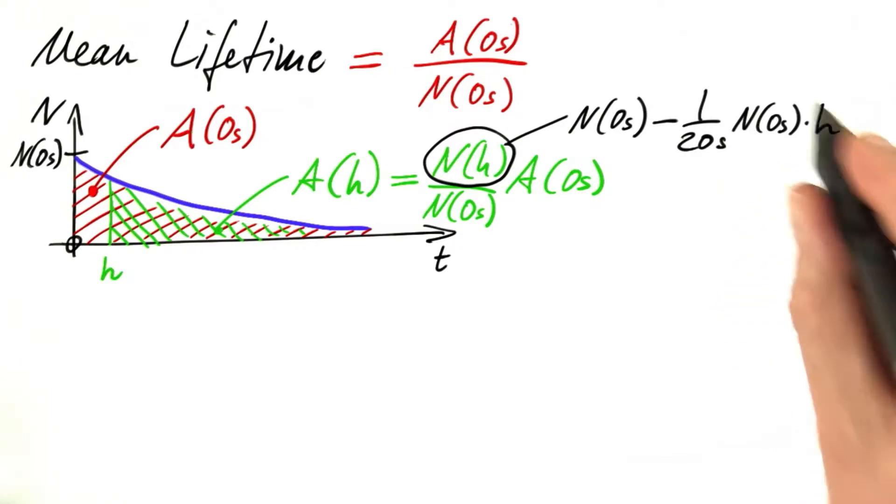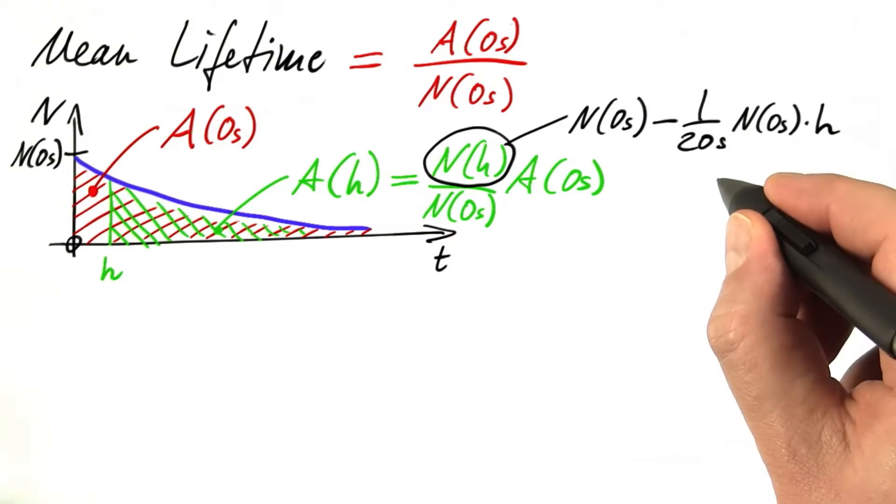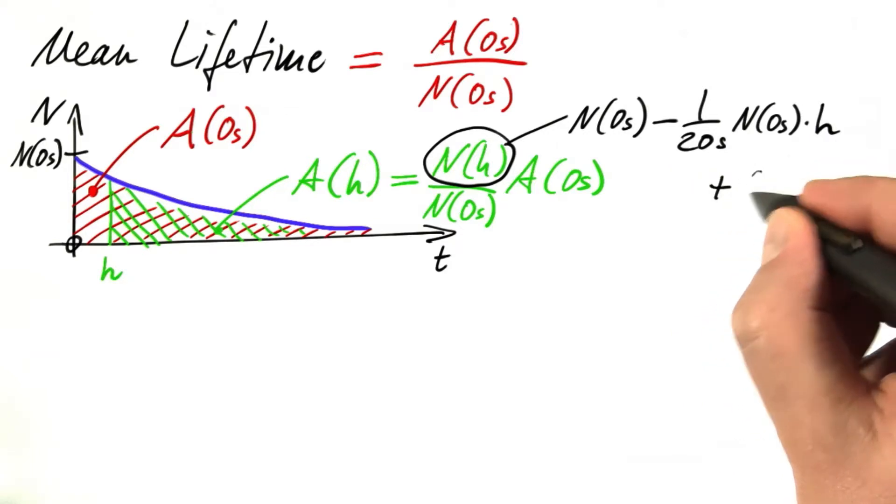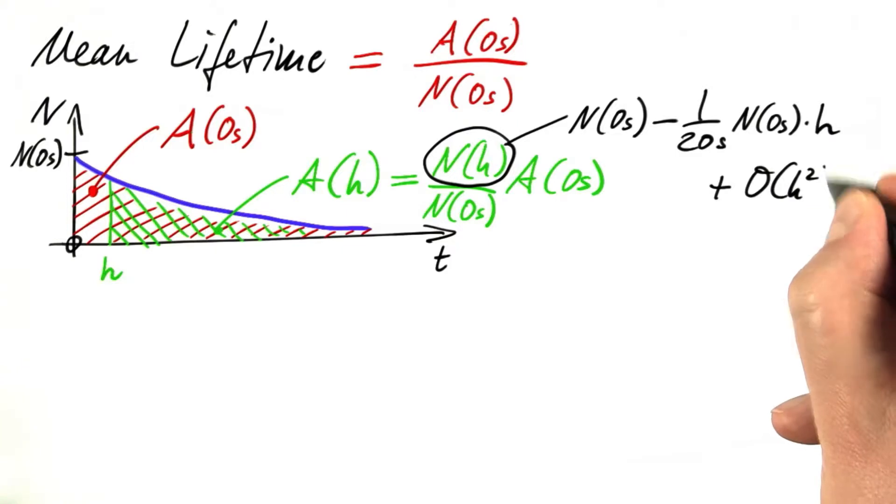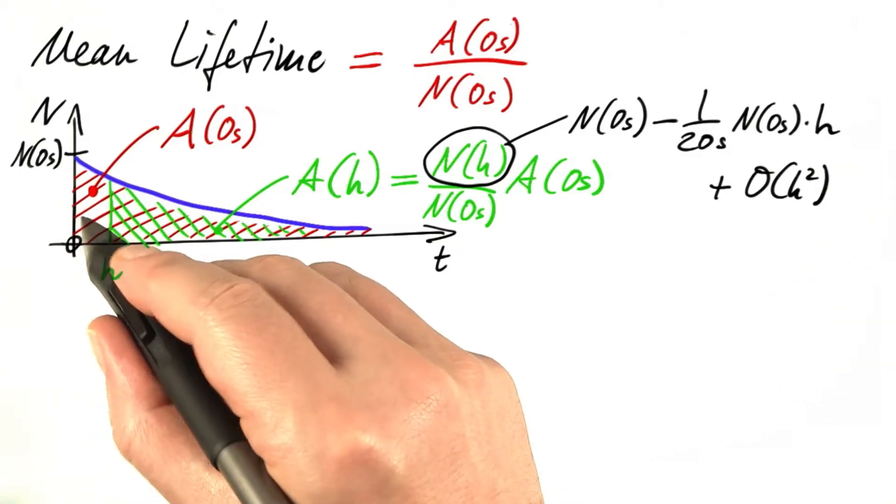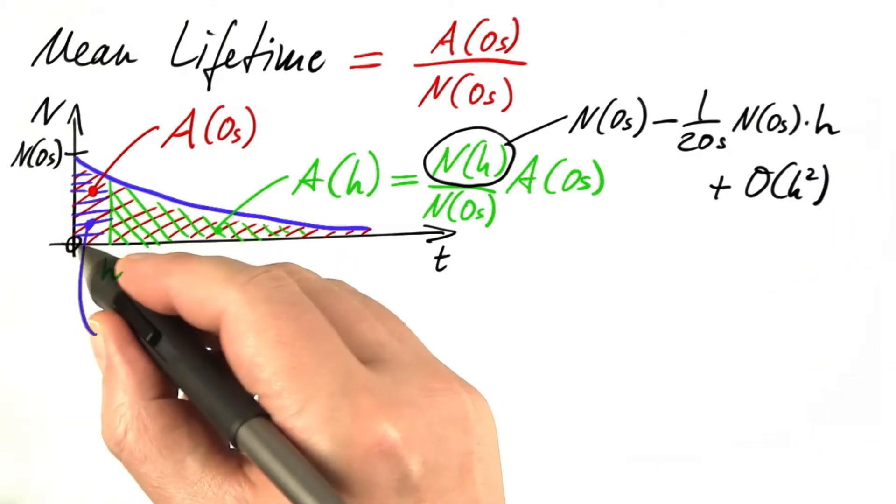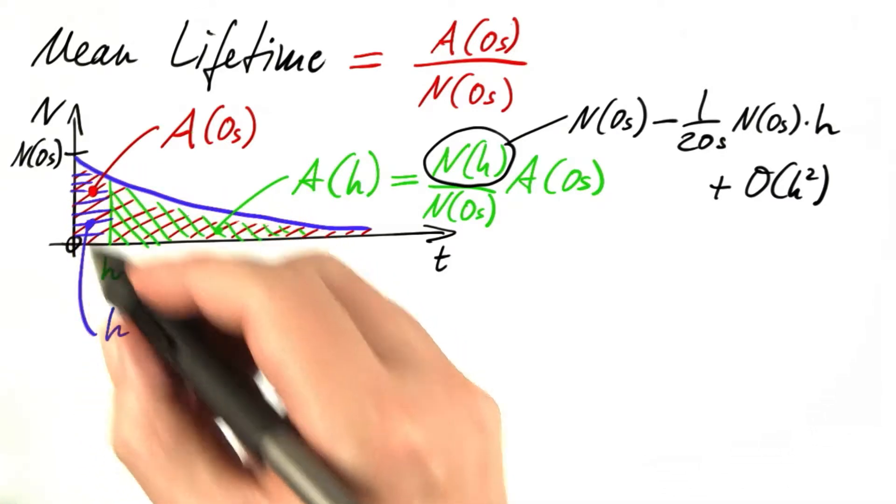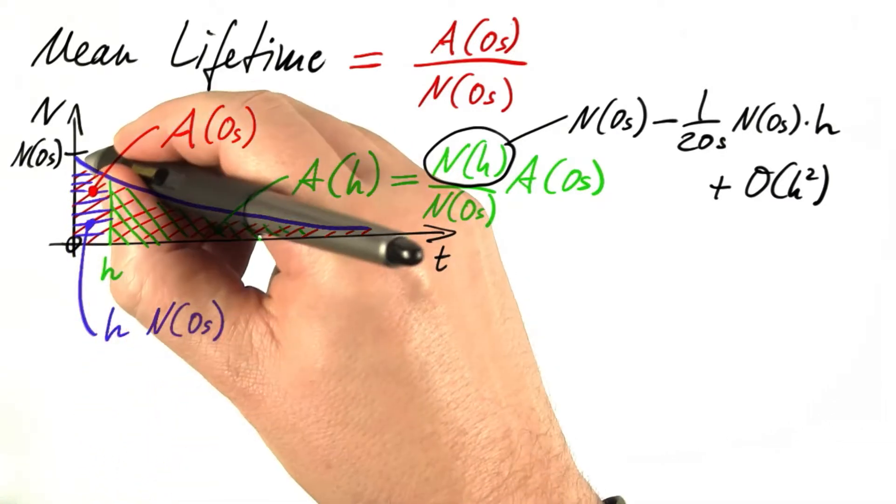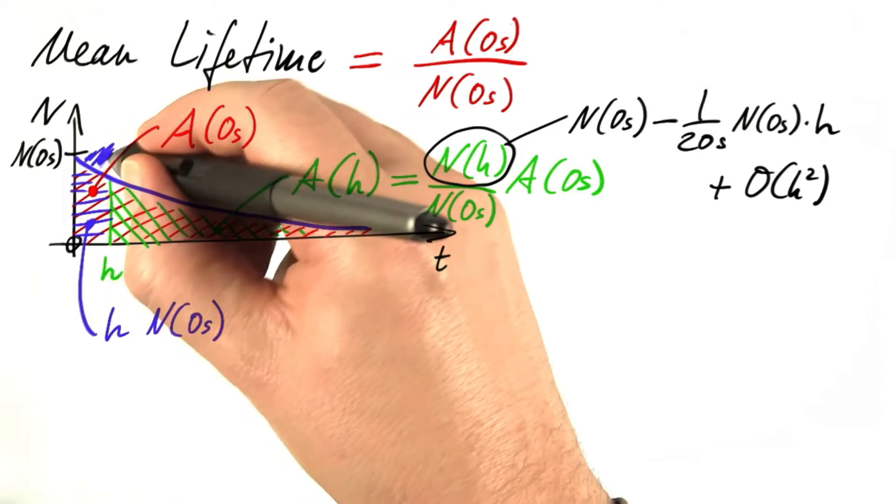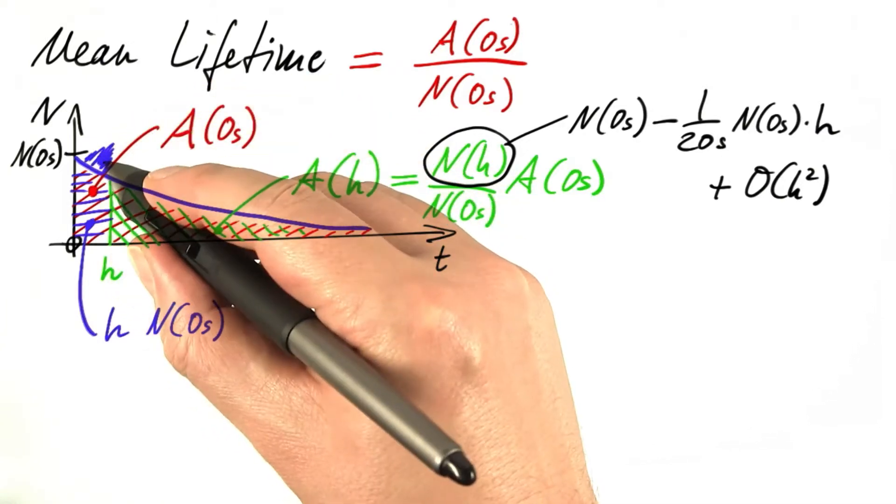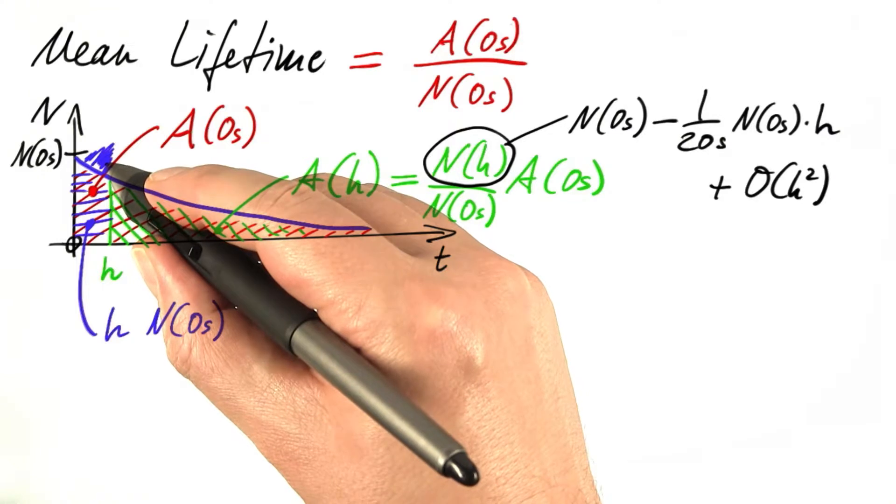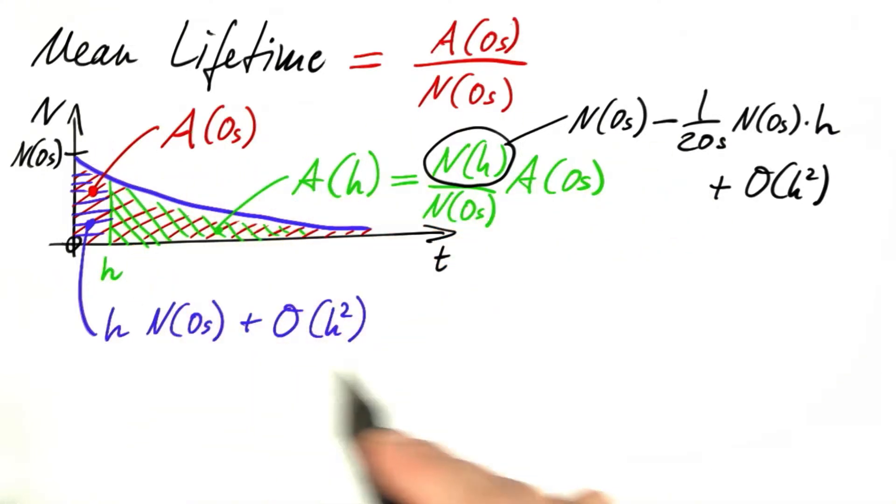That's, of course, just an estimate. If I want this to be more accurate, I need to take care of the remainder, which is something of order h squared. And now here's the tiny area left. This area amounts to its width h times its height, the initial number of particles. Well, not perfectly. We are neglecting something, but that's of order h squared.